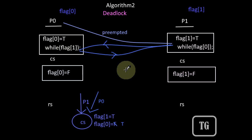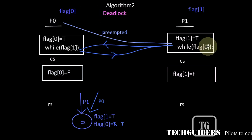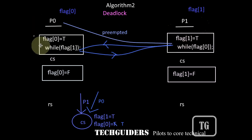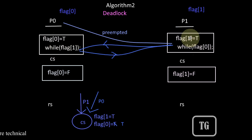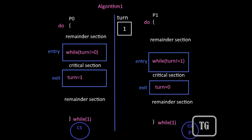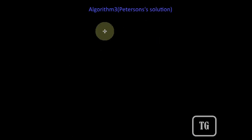The only problem with the previous algorithm was that it can lead to a condition called deadlock when both the processes are in the entry section simultaneously and both the flags are set to true at the same time. This algorithm with the flag variables is combined with algorithm 1 with the turn variable, and a new algorithm 3 has been designed, which is also called Peterson's solution.